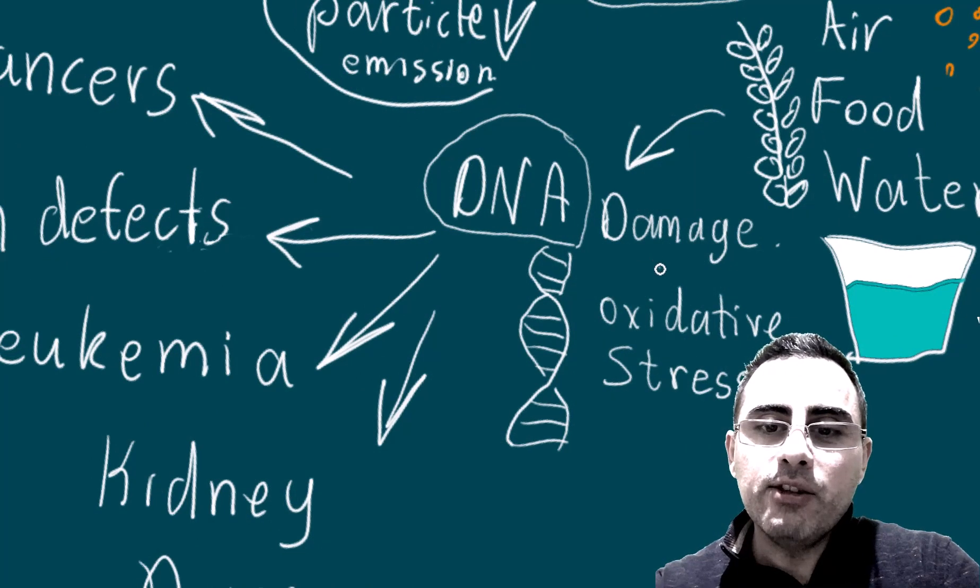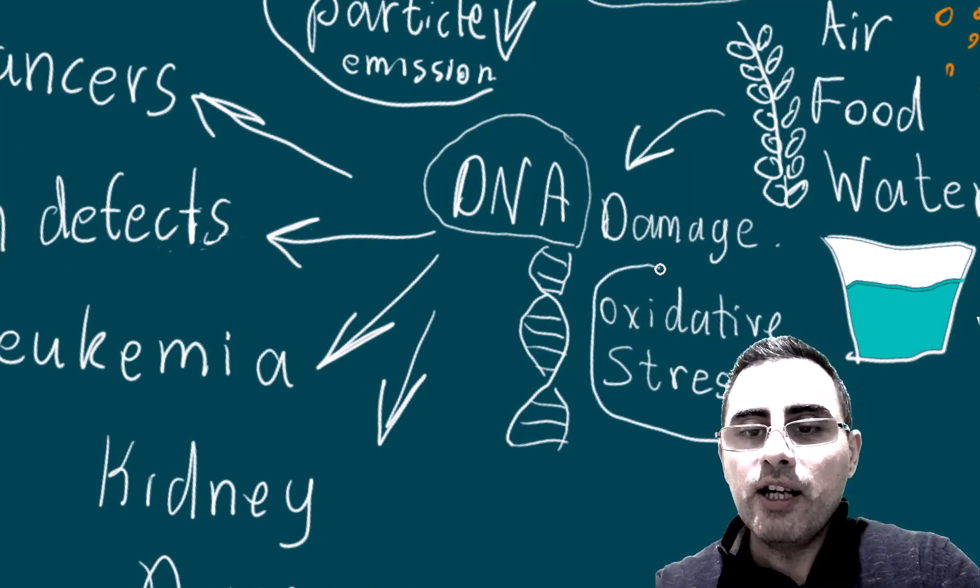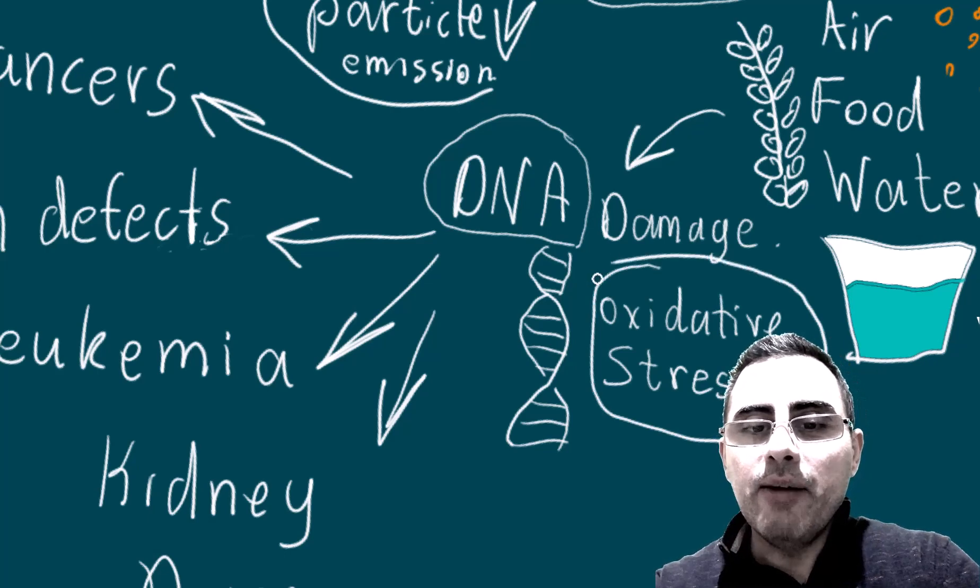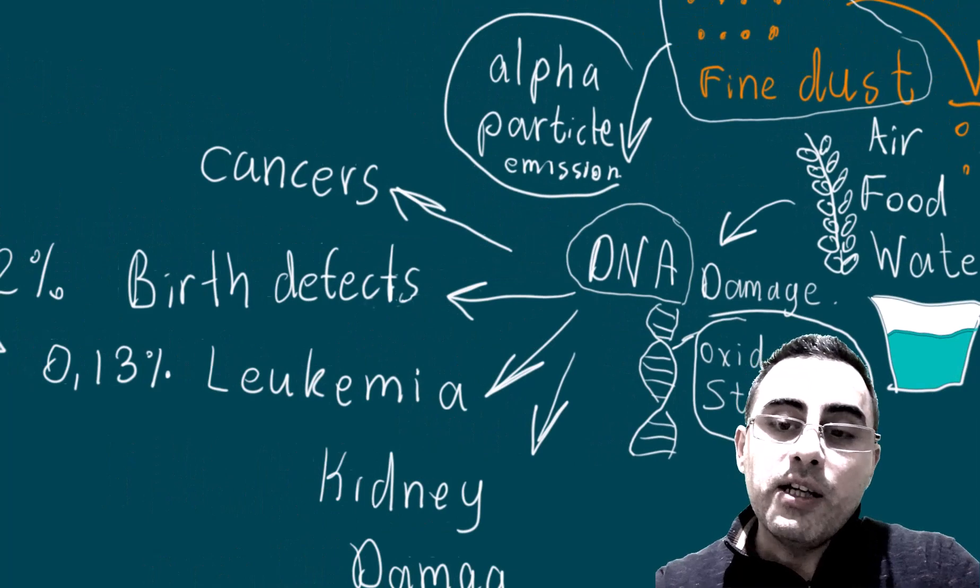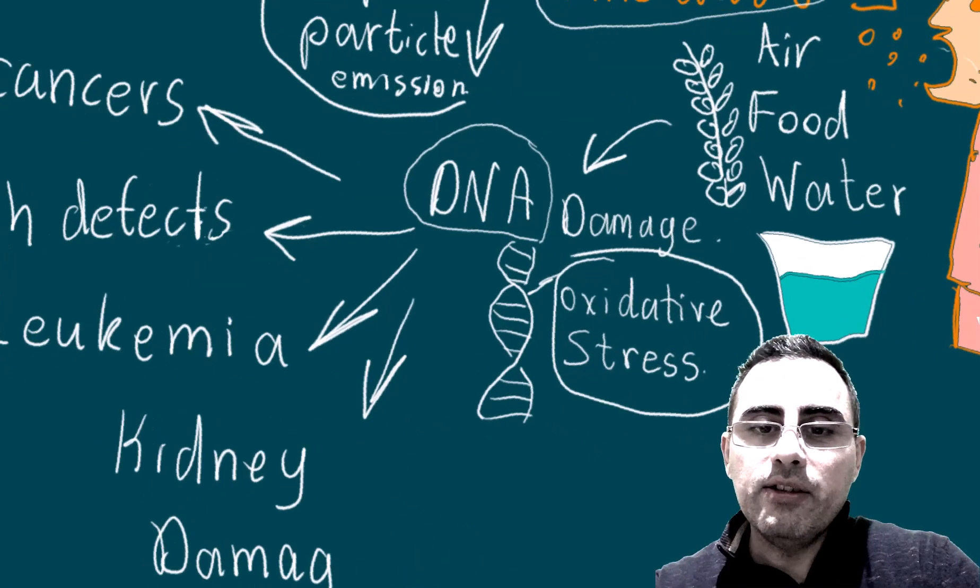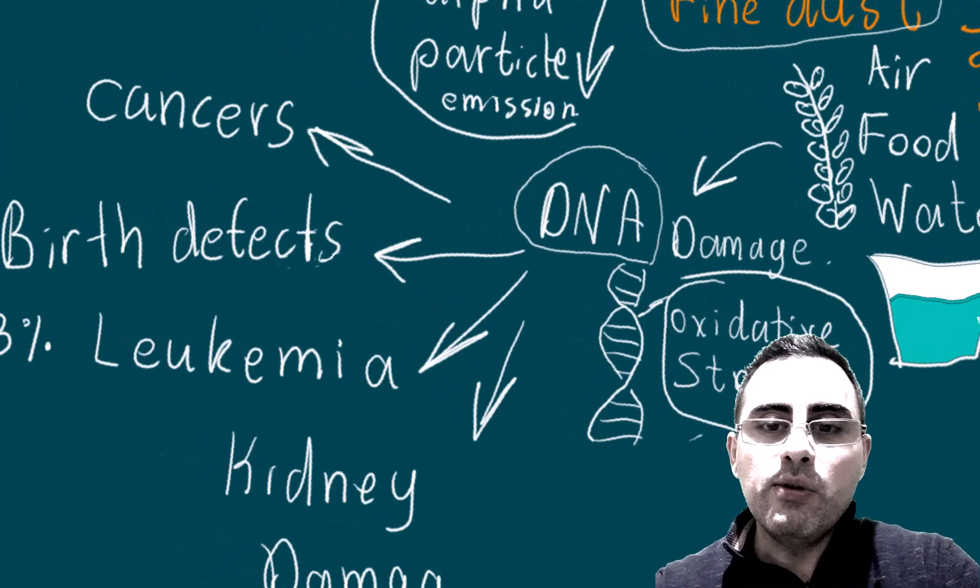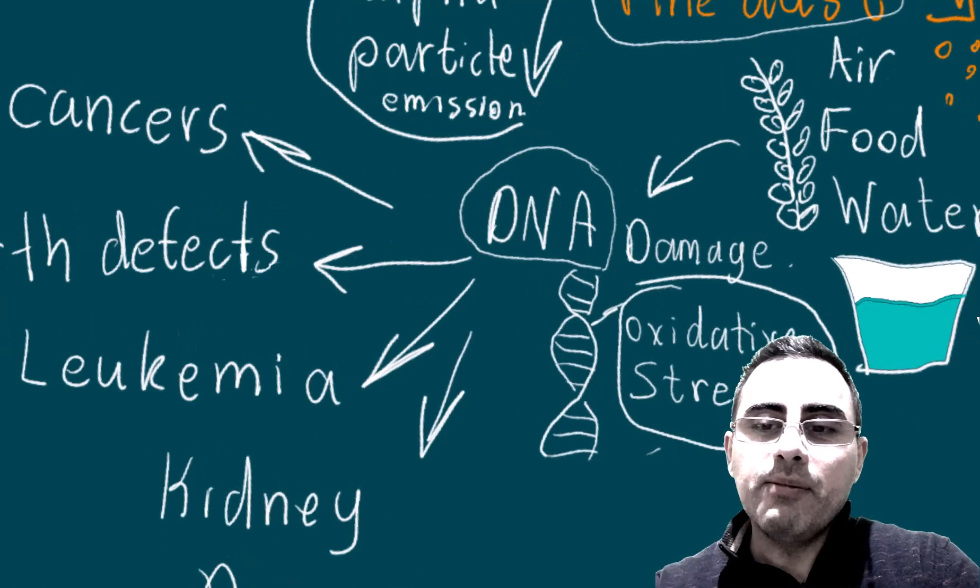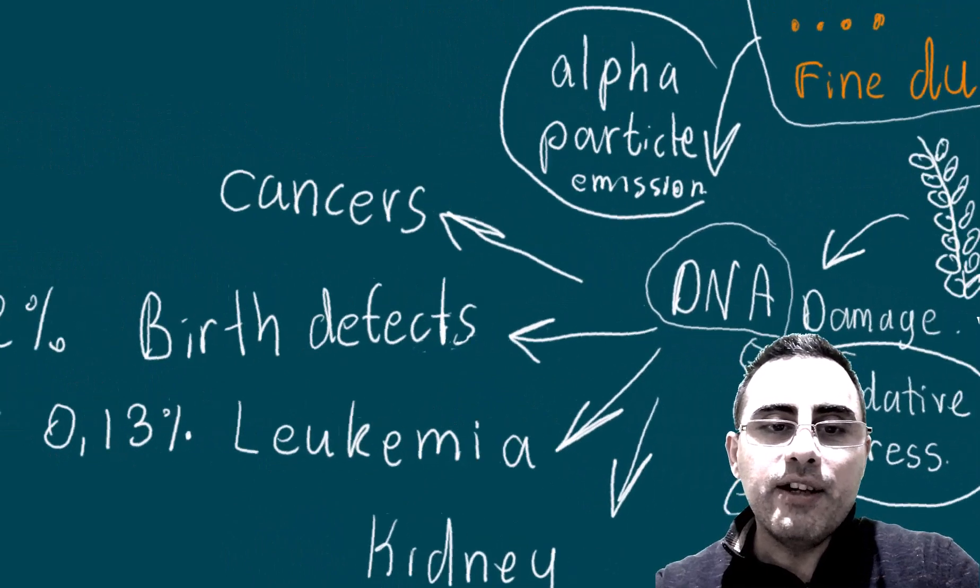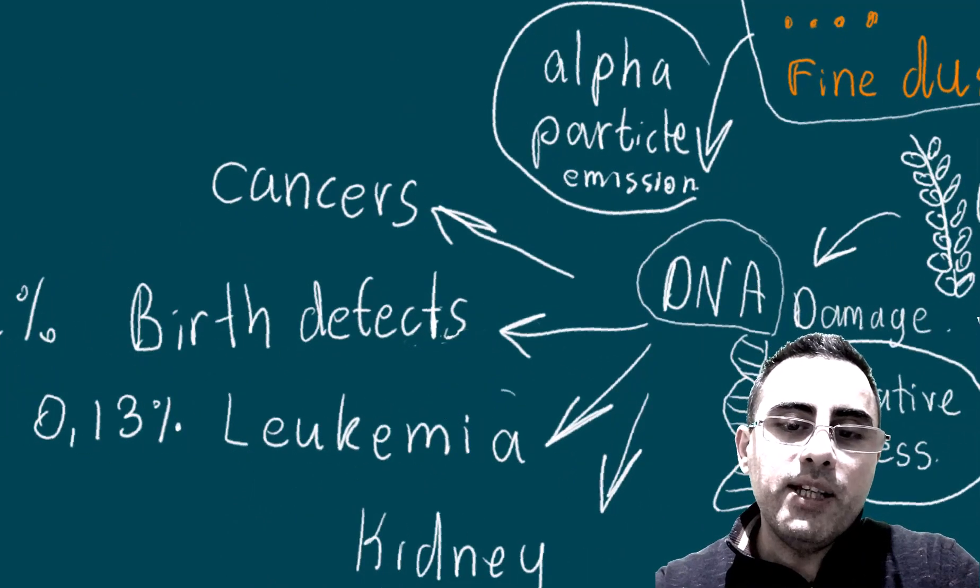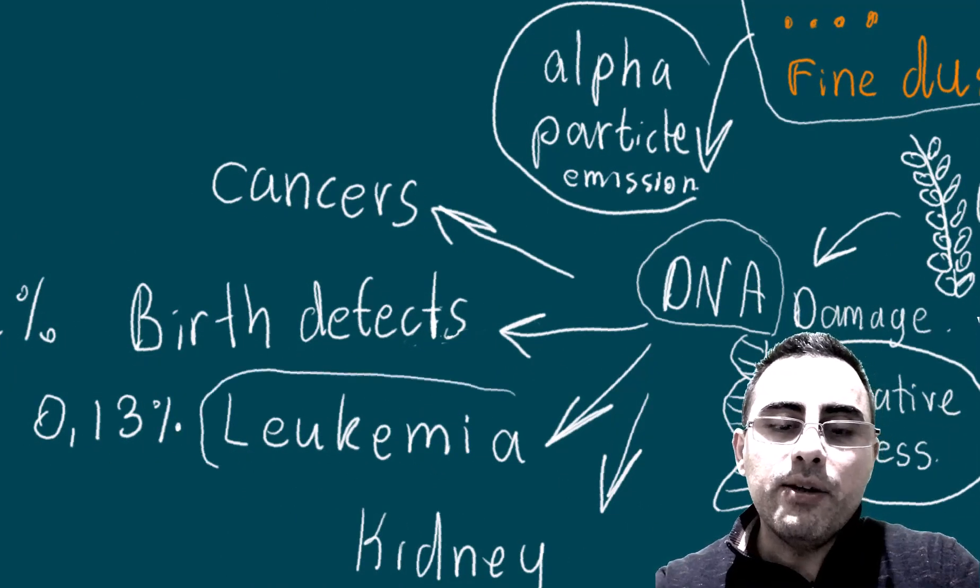It increases risk of different diseases including cancer, birth defects, leukemia, kidney damage. The main mechanism of action of depleted uranium is oxidative stress. Oxidative stress damages DNA—that's the main mechanism. But still, researches are needed to confirm the findings and to explain exact mechanism of action.